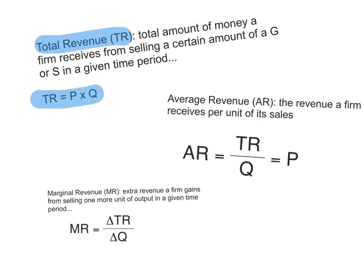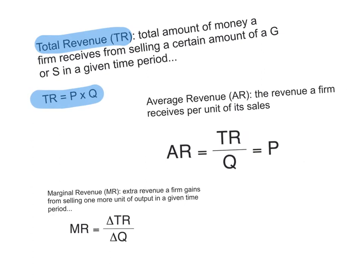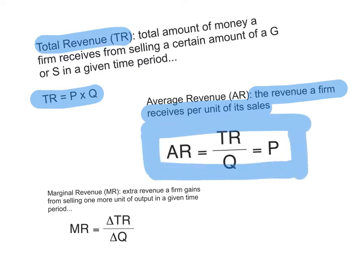Let's have a look at the concept of average revenue. Average revenue is the revenue that a firm receives per unit of its sales — the revenue it receives on average per unit of its sales. To calculate average revenue, you divide total revenue by quantity, which gives us the price. So, average revenue is actually the price.